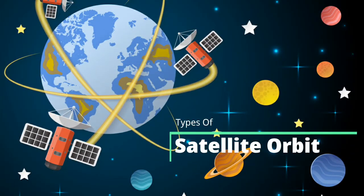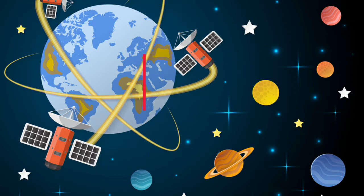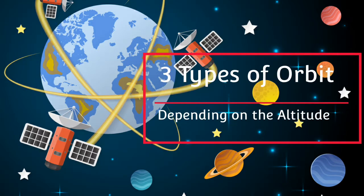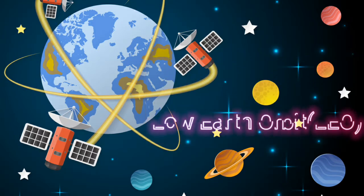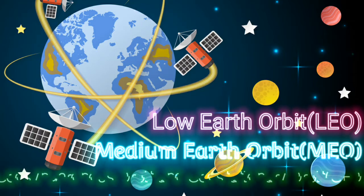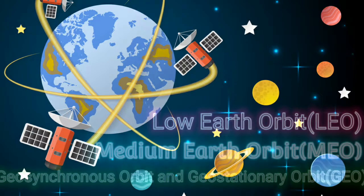Now, let's talk about the types of satellite orbit. There are three types of orbit depending on the altitude: Low Earth orbit, medium Earth orbit, geosynchronized orbit, and geostationary Earth orbit.